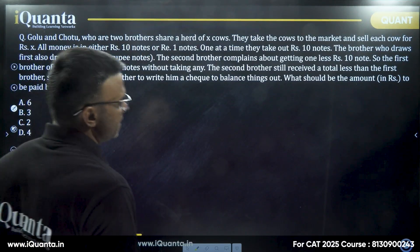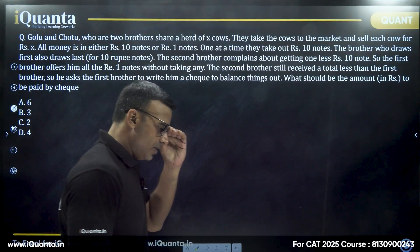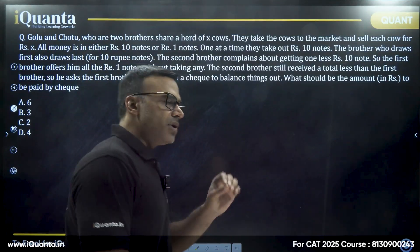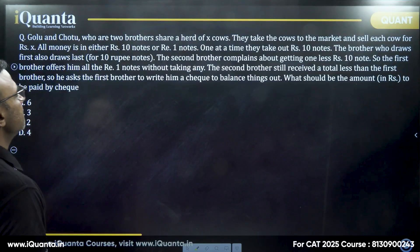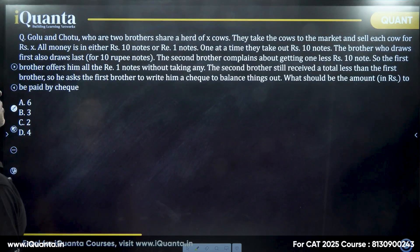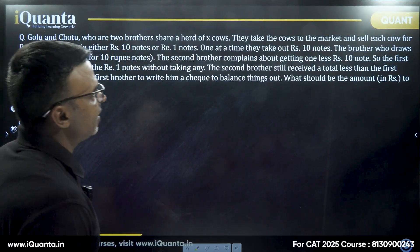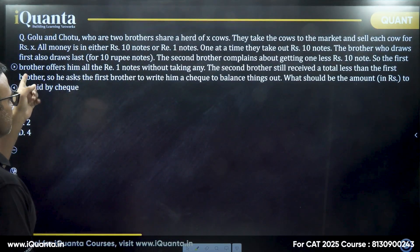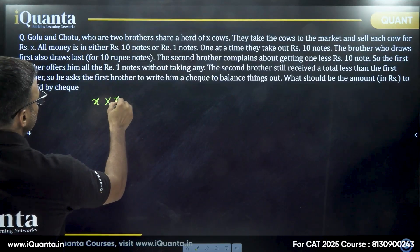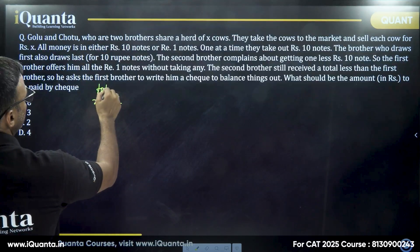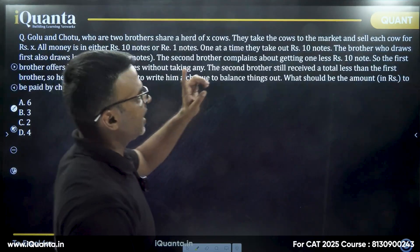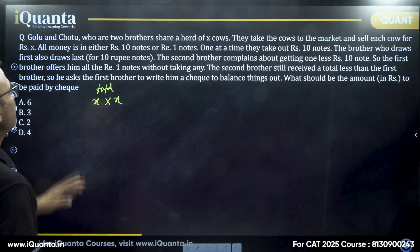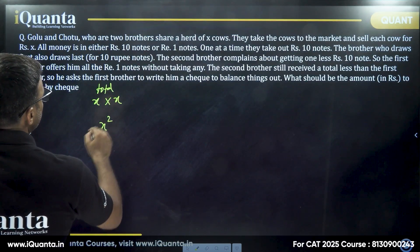This is an extremely beautiful question — not concept-based, but based on a very basic observation of numbers, particularly squares. Golu and Chotu, two brothers, share a herd of X cows. They take the cows to the market and sell each cow for rupees X. So the total money collected would be X times X, which is X squared.